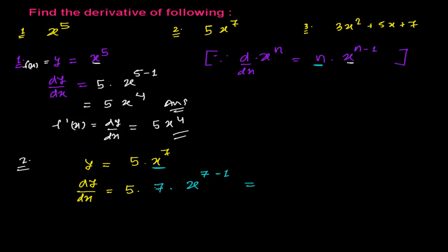Now 7 times 5 gives 35, so we multiply the constant in as well. The result is 35 times x to the power 7 minus 1, which is x to the power 6. So the derivative is 35x⁶. Finding derivatives is very easy once you know the rule.